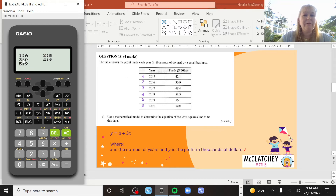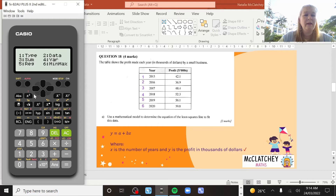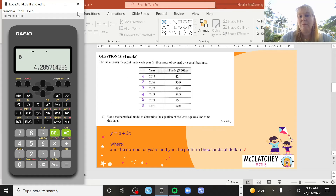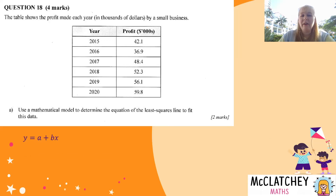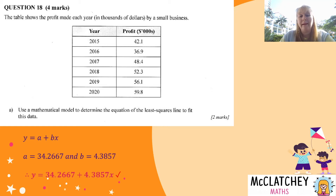To retrieve the values, click Shift, then the 1 button, and all the information you need is under 5 (Reg), which stands for regression. We find a equals approximately 34.2667, and using the regression button again, b equals 4.2857. Write those values down, then bring them together into the equation y = 34.2667 + 4.2857x, which earns the second mark for part a.